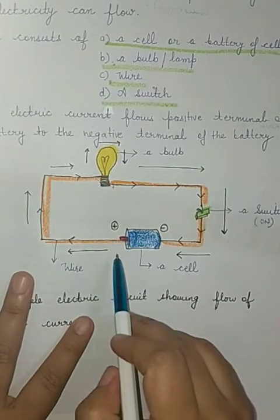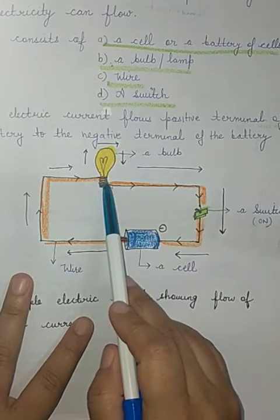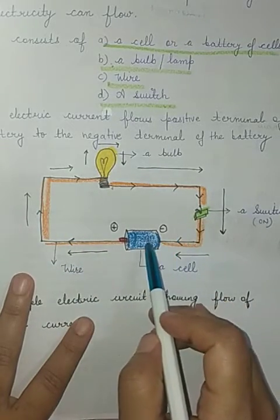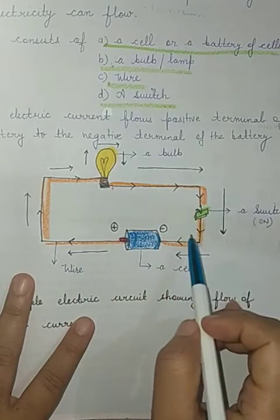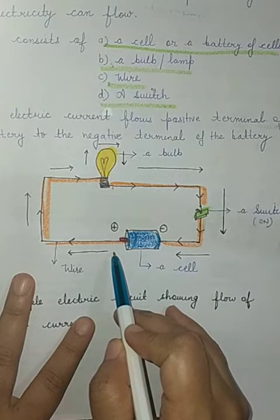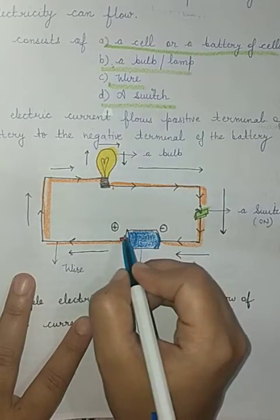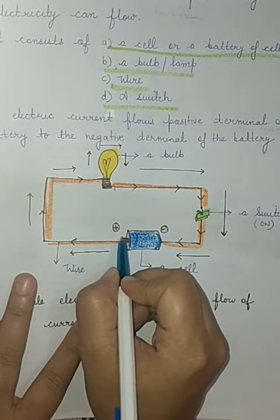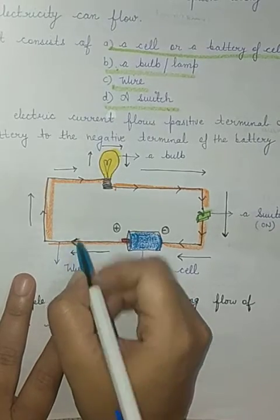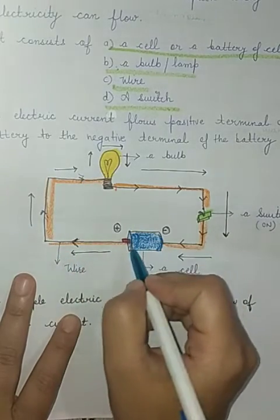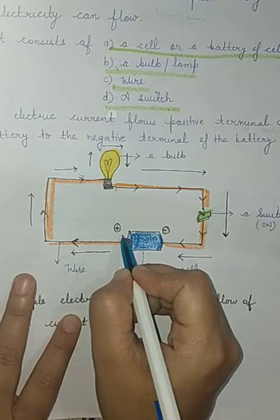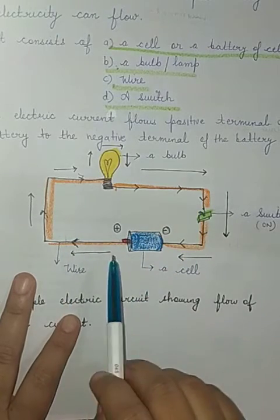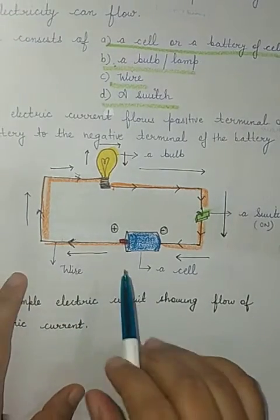Here is a simple diagram of an electric circuit. There is one bulb, one switch, a cell, and wire. Electricity flows along this path from the positive terminal to the negative terminal of the cell. The arrows in the diagram show the direction of flow of electric current — from the positive terminal to the negative terminal.